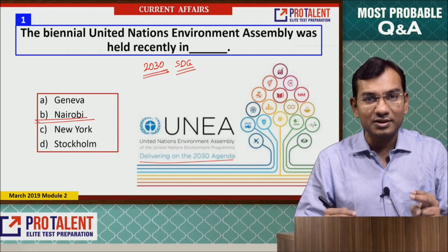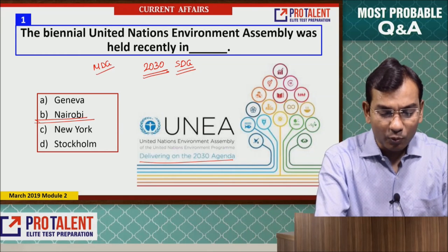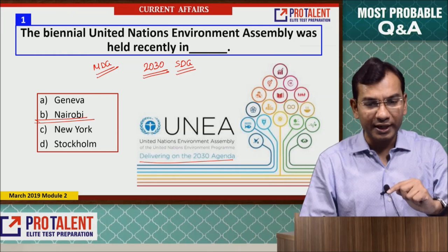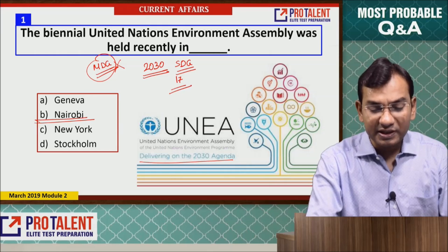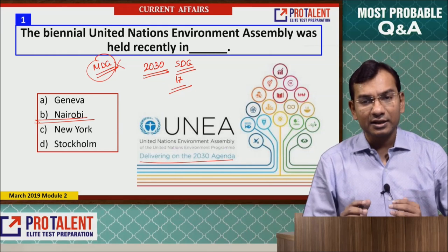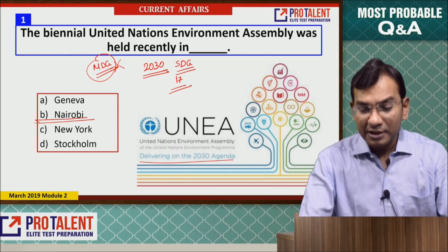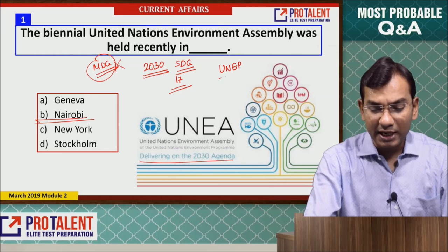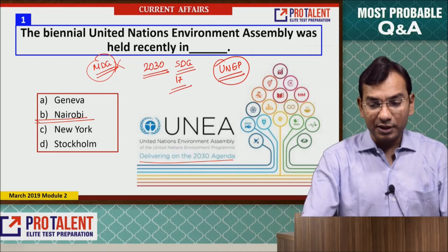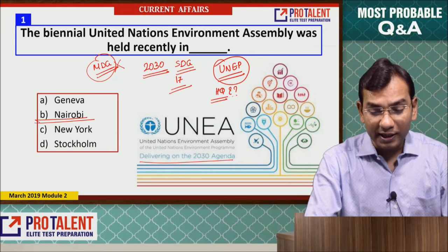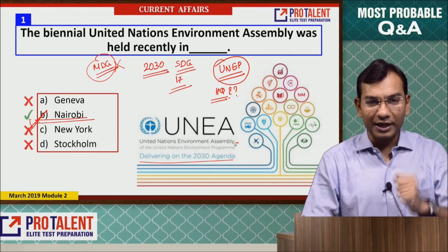The SDGs came into existence from 2015, replacing the MDGs — Millennium Development Goals. There are a total of 17 SDGs. You should also know about the United Nations Environment Programme and where its headquarters is located — that's your question.